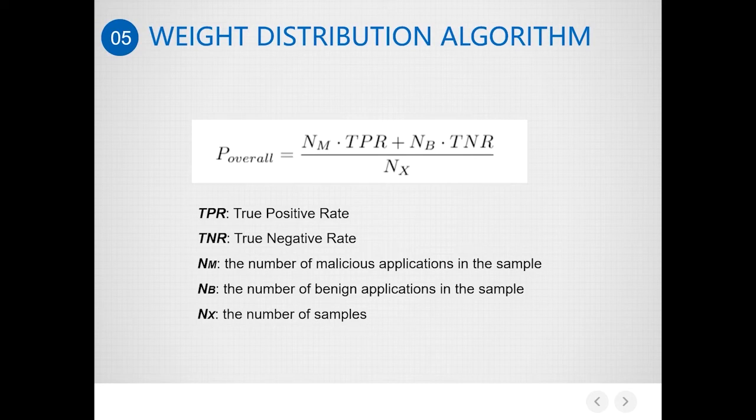Then the overall accuracy of the weighted classifiers can refer to these following equations, where nm and nb represent the number of malicious and benign applications in the sample, and nx represents the number of samples.